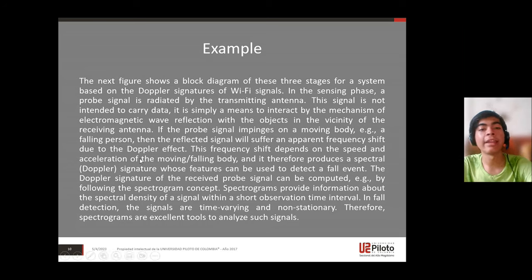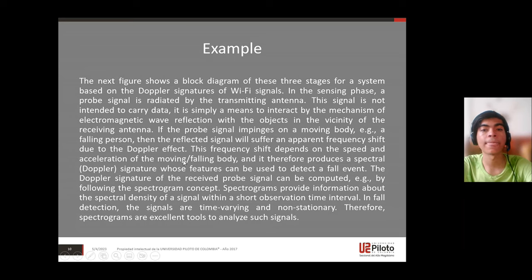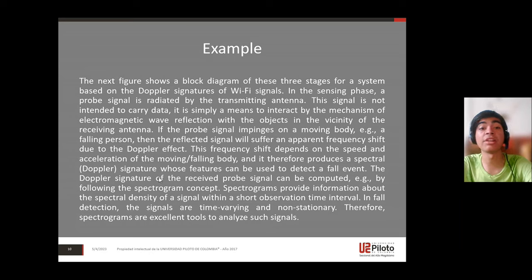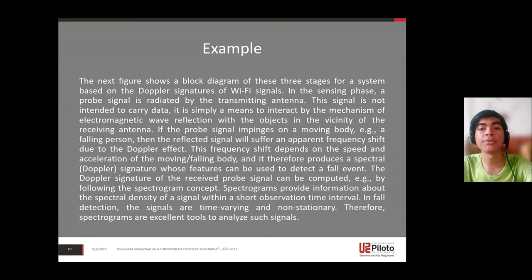If the probe signal is in the presence of a moving body — such as a falling person — then the reflected signal will suffer an apparent frequency shift due to the Doppler effect. This frequency shift depends on the speed and acceleration of the moving or falling body, and it therefore produces a spectral Doppler signature.